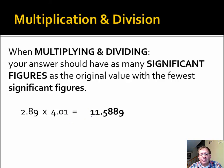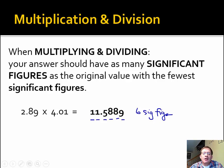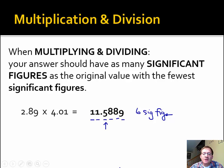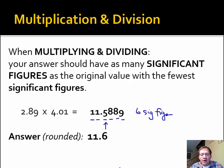My answer needs to have just three significant figures. How many does 11.5889 have currently? The decimal point is present, so counting left to right: one, two, three, four, five, six — six significant figures. That's way too many. We need to round it off so it has only three. So 11.5889 rounded to the third significant figure position — which is in the tenths place — rounds up to 11.6. Our final answer has one, two, three significant figures, just like it should.